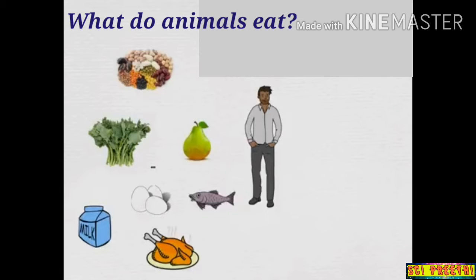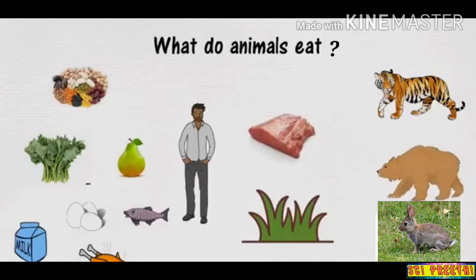Human beings eat plants like cereals, pulses, vegetables and fruits, as well as animal food like meat, eggs, chicken, fish, milk, etc. Human beings eat a large variety of food, but animals eat only a few types. Some animals eat only plant material, while some eat the flesh of other animals, and some eat both.